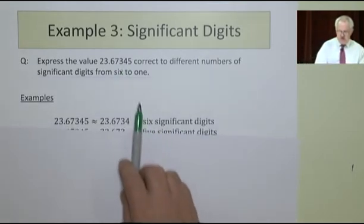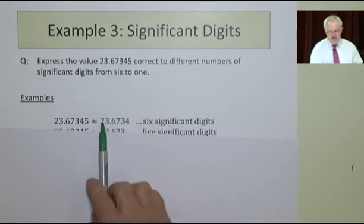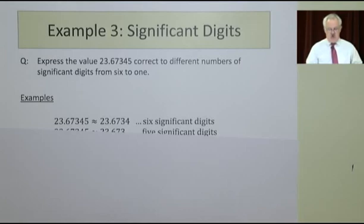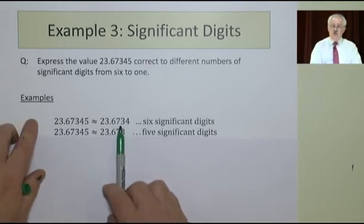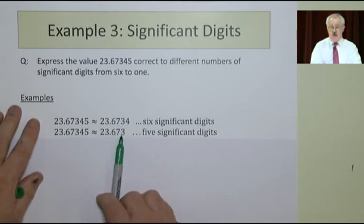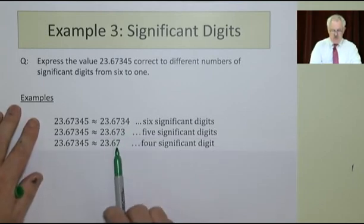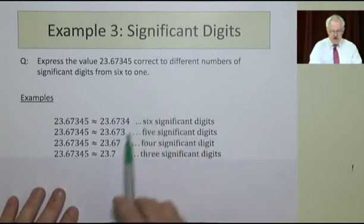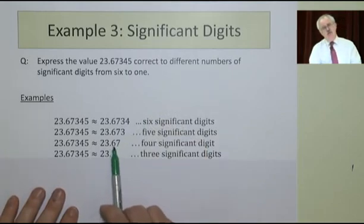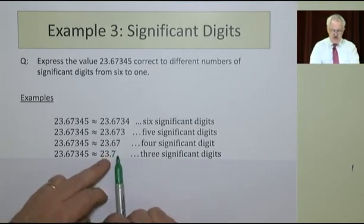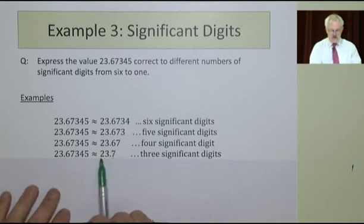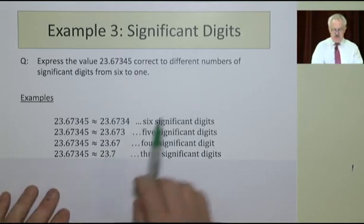So instead of 4, 5, we might just say 4: 23.6734. If I wanted to go to one less digit than that, 3, 4 would be rounded to 3. 7, 3 would be rounded to 7. And 6, 7 is nearly 0.7. 0.67 is nearly 0.70 as opposed to 0.60. It's only 3 away from 0.7 but 7 away from 0.6. So that's 23.7.